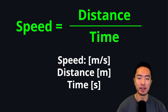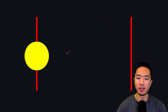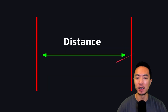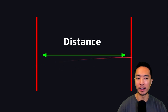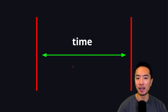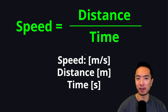Speed is defined as distance over time. So let's say you have an object starting at point A and then it goes to point B. If you know the distance between point A and point B, assuming it moved in a straight line, and you know how long it took, then you could theoretically find the speed by taking distance and dividing it by time.